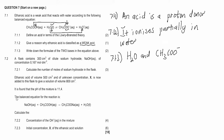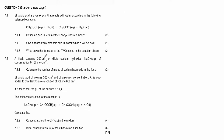Now let's start with the calculation questions. A flask contains 300 cm³ of dilute sodium hydroxide of concentration 0.167 mol·dm⁻³. We are given the volume in cm³, so we convert by dividing by 1000 to get 0.3 dm³.